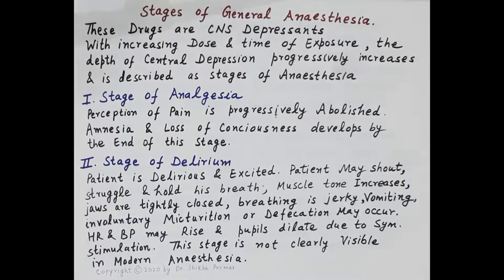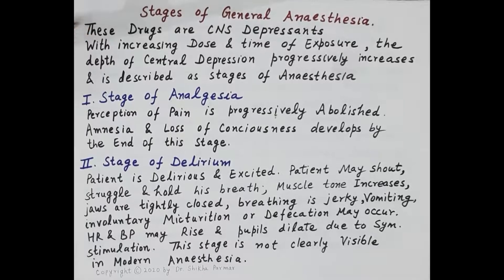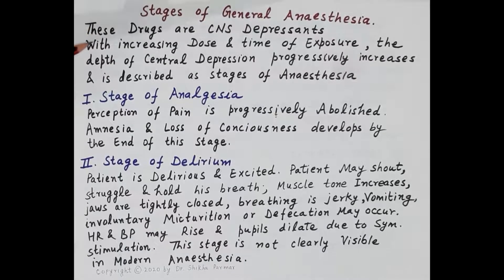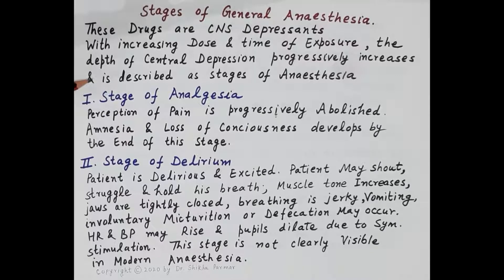Now we will talk about the stages and the depth of general anaesthesia. As already discussed, all general anaesthetics are CNS depressants, and with an increase in the dose of general anaesthesia and increase in the time of exposure, the depth of central depression progressively increases. This increase in the depth of central depression by general anaesthetics is described as the stages of anaesthesia.